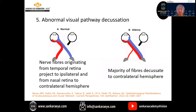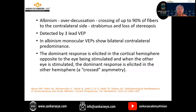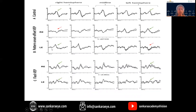Abnormal visual pathway decussation is classical in patients with albinism. Normally, the nerve fibers originating from the temporal retina project onto the ipsilateral hemisphere, and from the nasal retina, they go to the contralateral hemisphere. In children with albinism, the majority — 90% of fibers — decussate to the contralateral hemisphere. This is detected by three-lead VEP. In albinism, monocular VEPs show a bilateral contralateral predominance. The dominant response is elicited in the cortical hemisphere opposite to the eye being stimulated. When the other eye is stimulated, the dominant response is elicited in the other hemisphere — this is called crossed asymmetry. With right eye stimulation, the right hemisphere may not show the response, but it is nicely shown in the left hemisphere, and vice versa for the left eye.